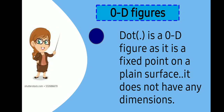0 dimension means no dimension. A point is a no dimensional figure. A dot is a 0 dimensional figure as it is a fixed point on a plane surface. It does not have any dimensions.